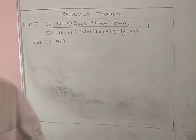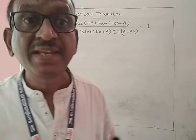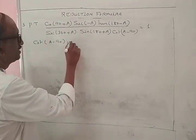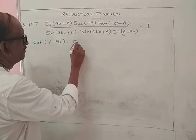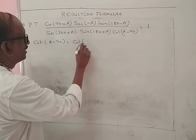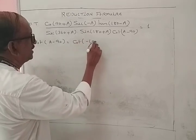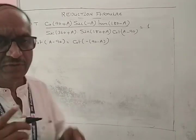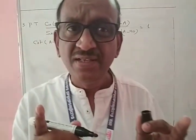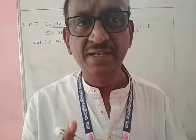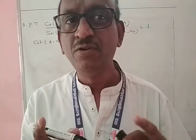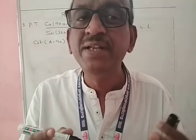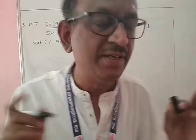The standard result is cot(90 - A). Therefore, rewrite cot(A - 90) as cot(minus(90 - A)). Since cot(minus θ) = minus cot θ, cot(A - 90) = minus cot(90 - A).